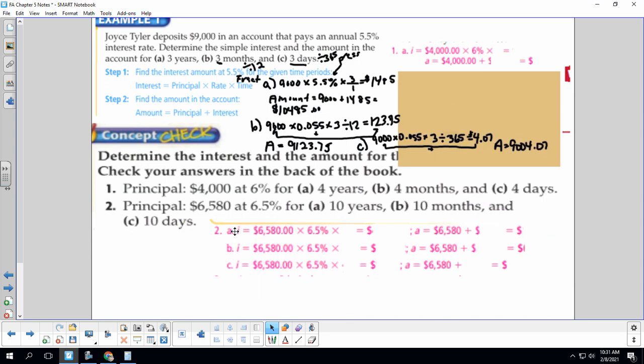So let's take a peek at these calculations. I answered number one up here because it was easier. So 4,000 times 6% times four years divided by one is $960. So the amount is $4,000 plus $960. So that's $4,960. So that's for four years.